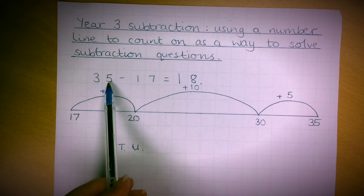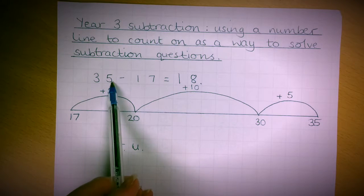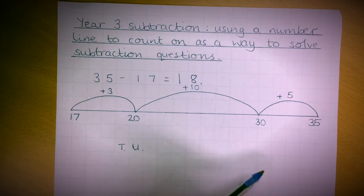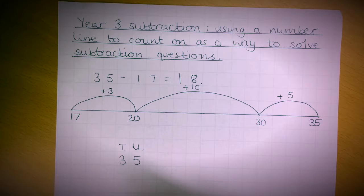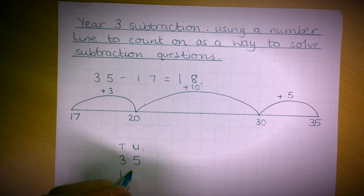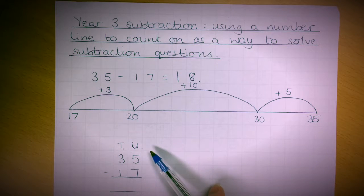It does matter which number goes on top because for subtraction to work, you have to have the biggest number on top and take the smaller number away. So 35 goes on top and 17 goes beneath it. We start from the right-hand side.